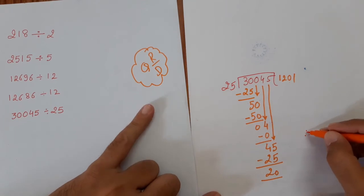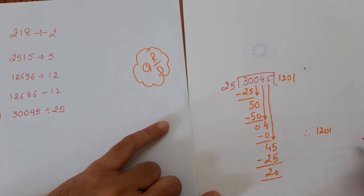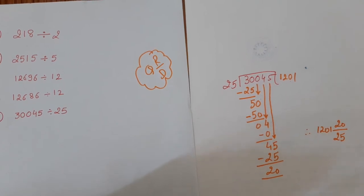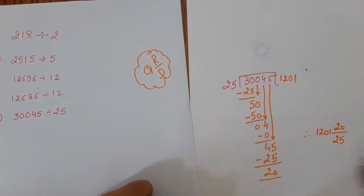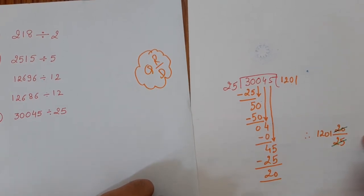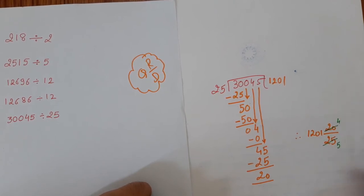So again QRE form. Therefore, the symbol is for therefore, quotient is 1201, remainder is 20, and divisor is 25. Since these two can be reduced, we will reduce it. This number is divisible by 5 and this number is also divisible by 5. So we have to see a common table. 5 times 4, 5 times 5. So therefore the answer is 1201 and 4 by 5 is our answer.